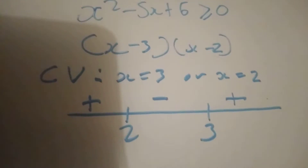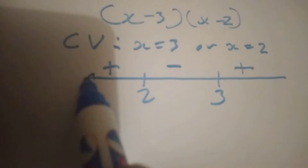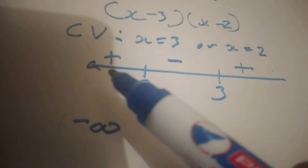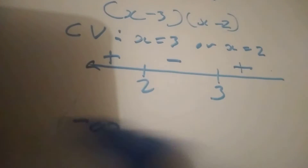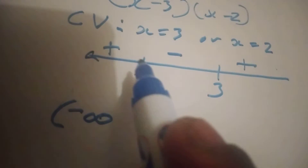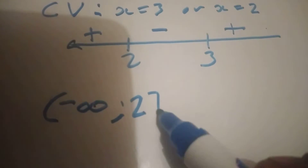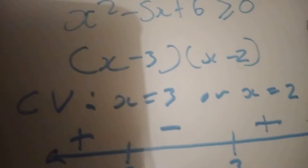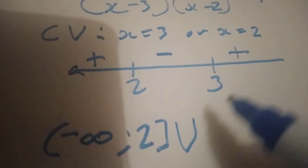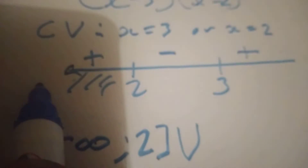The question says the expression must be greater than zero, meaning it must be positive. Groups 1 and 3 are positive. Let's describe group 1 using interval notation. Where does group 1 start and end? Group 1 has no beginning, so it starts from negative infinity — as we keep going lower we meet 1, 0, negative 1, negative 2, and so on. Negative infinity always has a curve bracket. So we say it starts from negative infinity until 2. Since the question says greater than or equals to, we put a square bracket at 2.